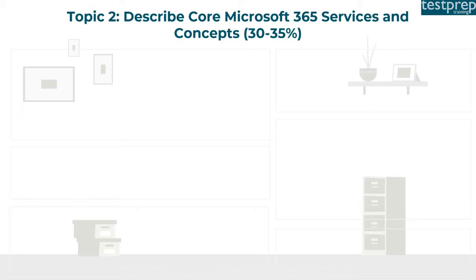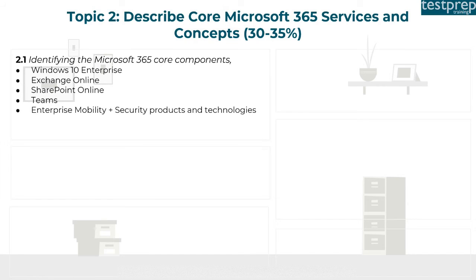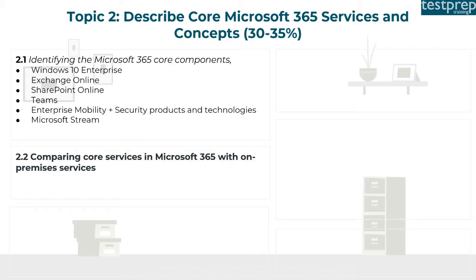Also covered is how to position Microsoft 365 in a software as a service scenario. Topic two covers core Microsoft 365 services and concepts. Number one: identifying the Microsoft 365 core components, including Windows 10 Enterprise, Exchange Online, SharePoint Online, Teams, Enterprise Mobility plus Security products and technologies, and Microsoft Stream.